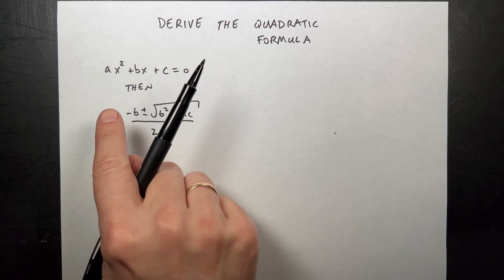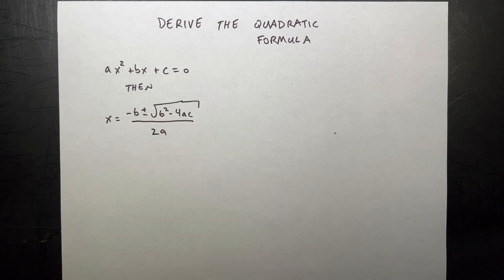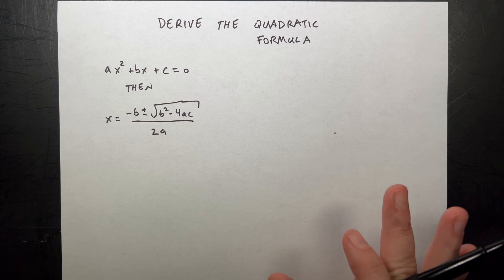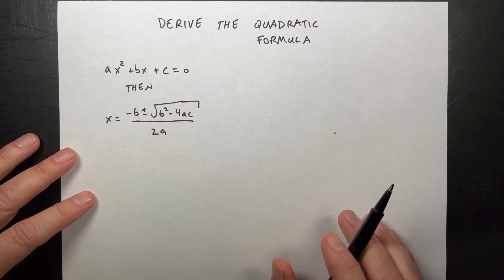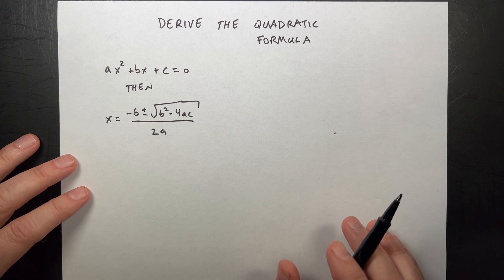If you had some numbers in there, you might be able to factor. And that's really what we're going to do. We're going to do a generic factoring. So we're going to factor this into a square.